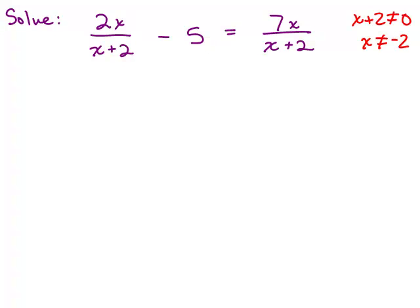You solve it like an equation, but write 'not equal' — a slash through the equal sign — for the restriction. Keep note of this because if you end up getting x equals negative 2, you know it can't be true. So I'm going to subtract 2x over (x+2) from both sides of the equation — I'll show that step just to make sure everybody sees it.